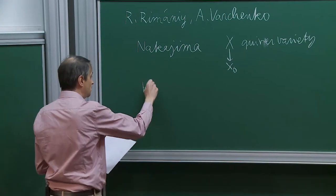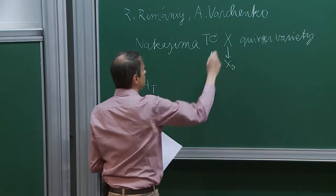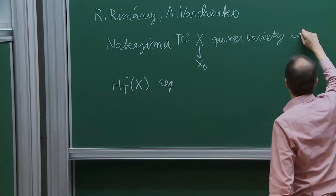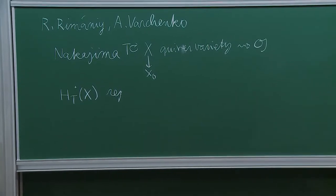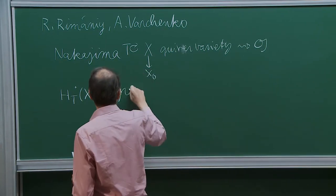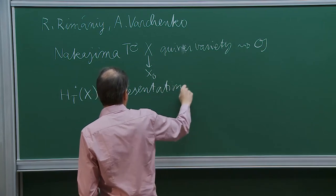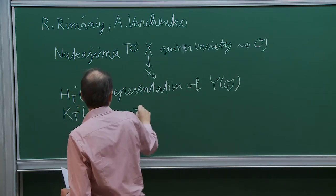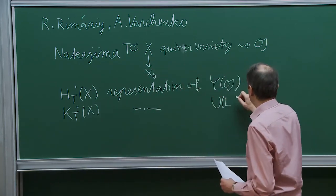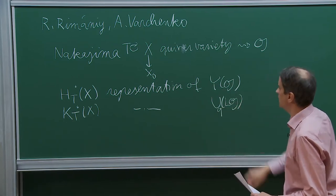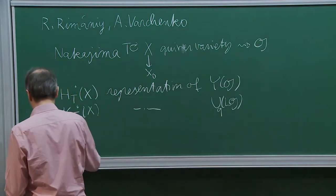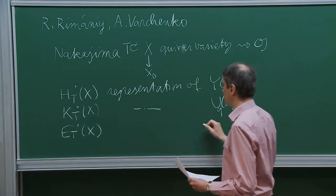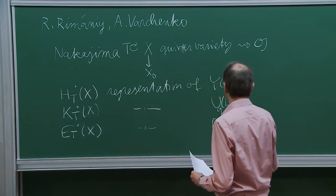There is a torus action on these varieties. If you take the equivariant cohomology, you get a representation — for each object you associate a Lie algebra, so if you take an ADE quiver, you get the ADE simple Lie algebras. This gives a representation of the Yangian of G. If you take equivariant K-theory, it will be a representation of the universal enveloping of the loop algebra, deformed. And then, less understood at the moment, there is also elliptic equivariant cohomology, and here you should get representations of the elliptic quantum group associated to G.